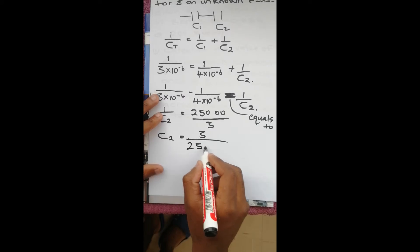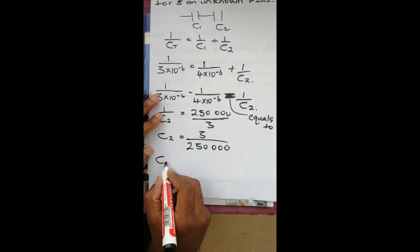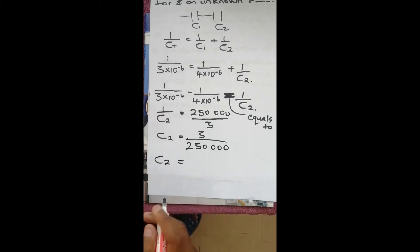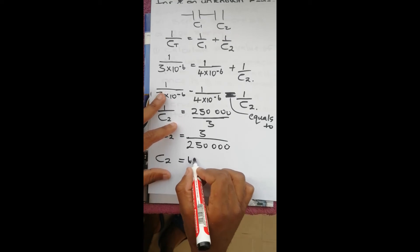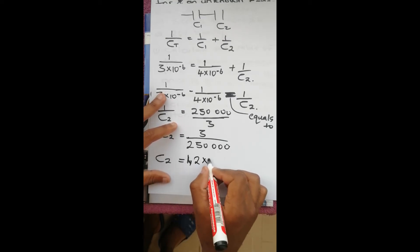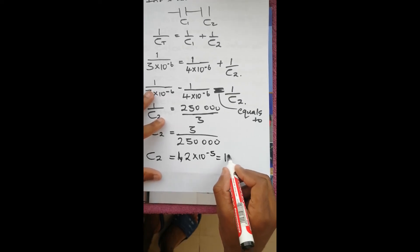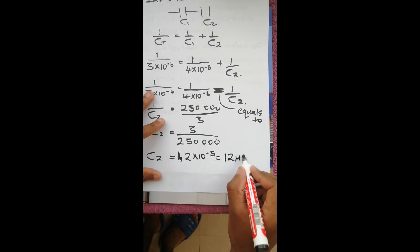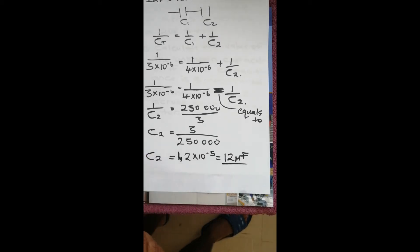So C2 equals three over two hundred and fifty thousand, which is 1.2 times ten to the power negative five, which is equal to 12 microfarad. That's it for the first question.